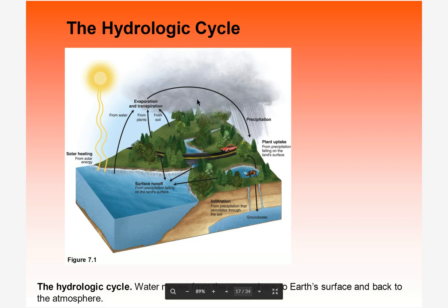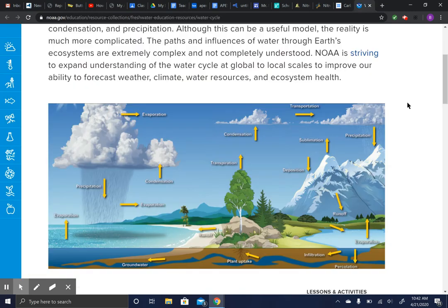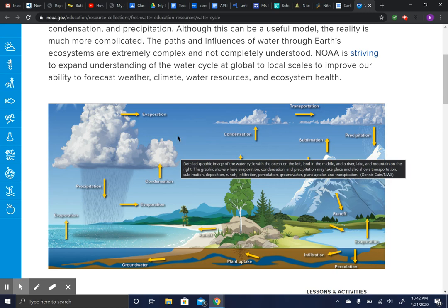Water gets back up into the atmosphere and then it precipitates as snow or rain. It gets into all the water sources — it can percolate and filter through to get to groundwater, it can run off and go into oceans, rivers, streams, lakes, and ponds. Plants can uptake it, animals can drink it. You have different sources and different sinks.